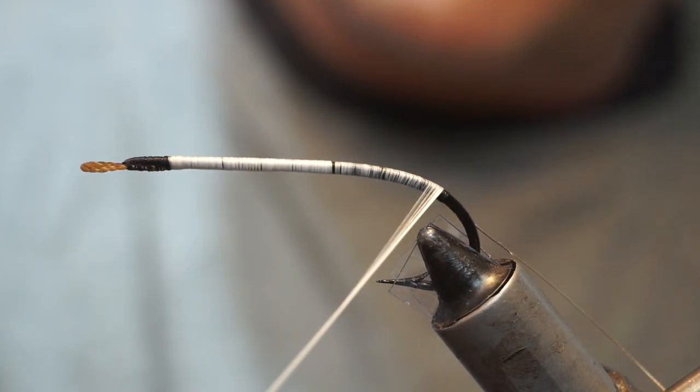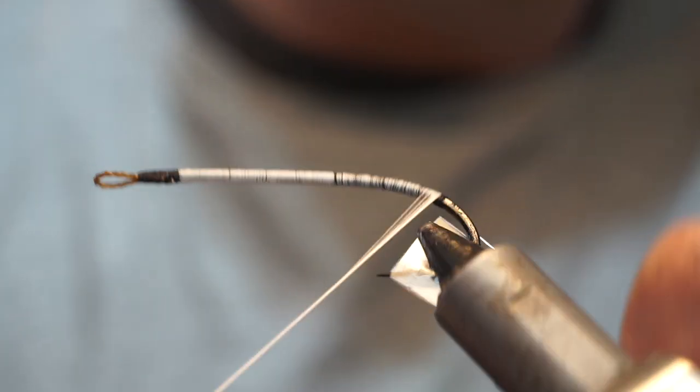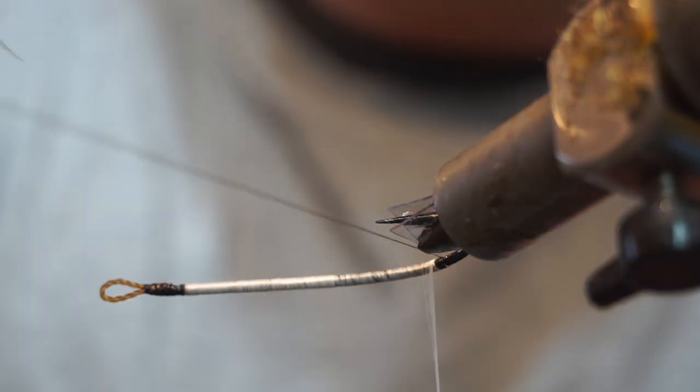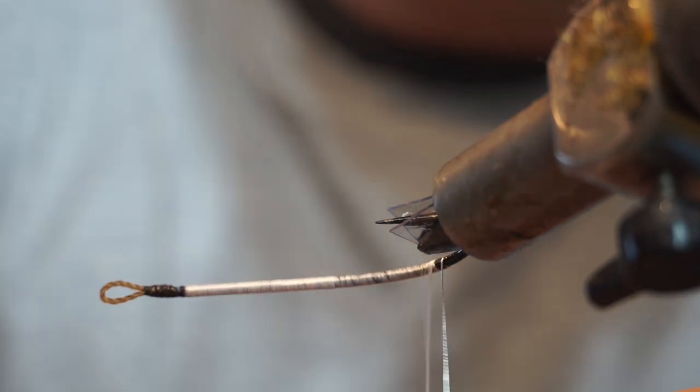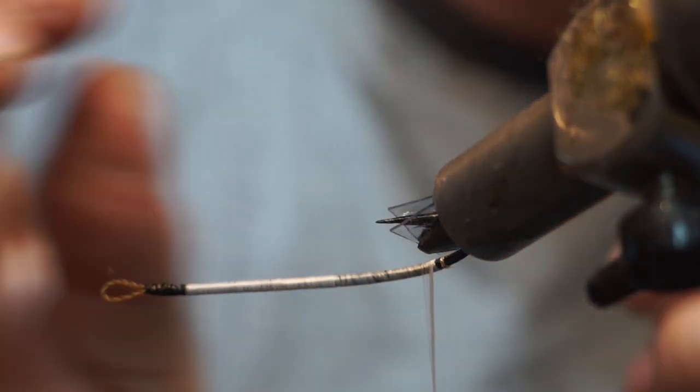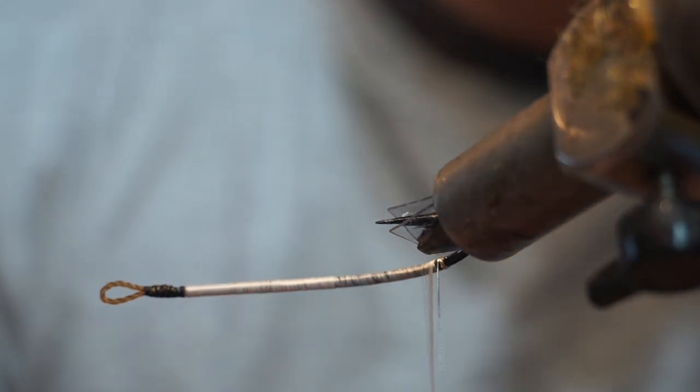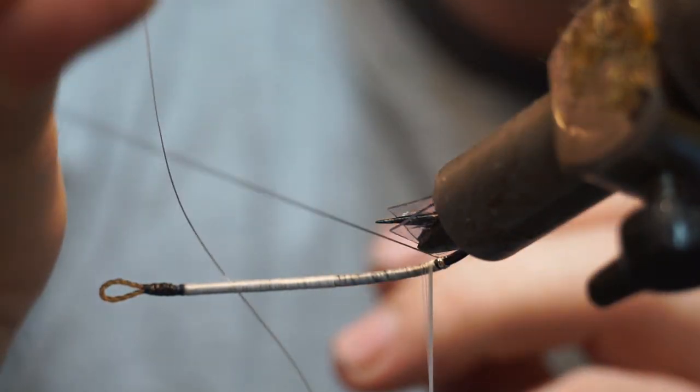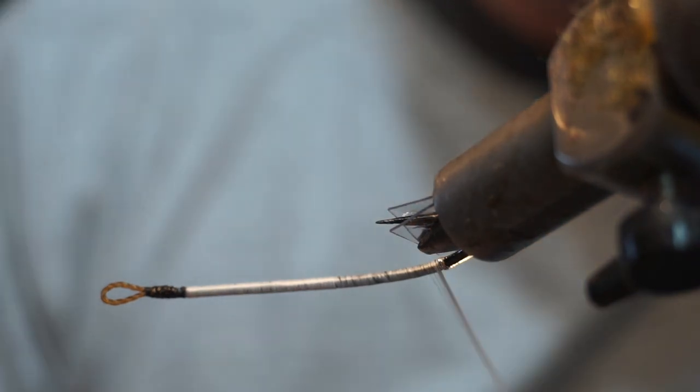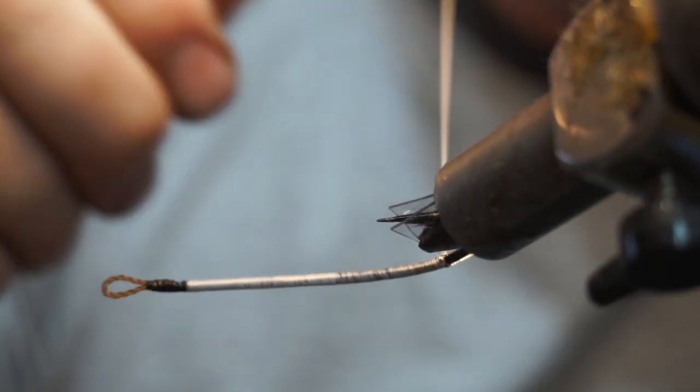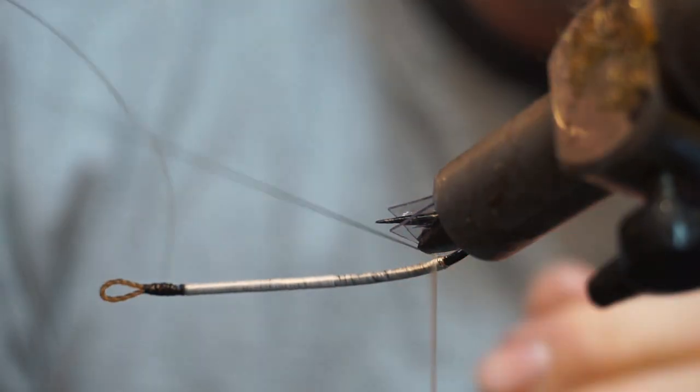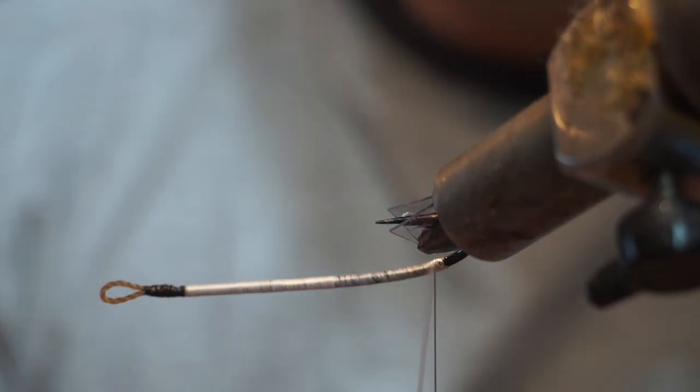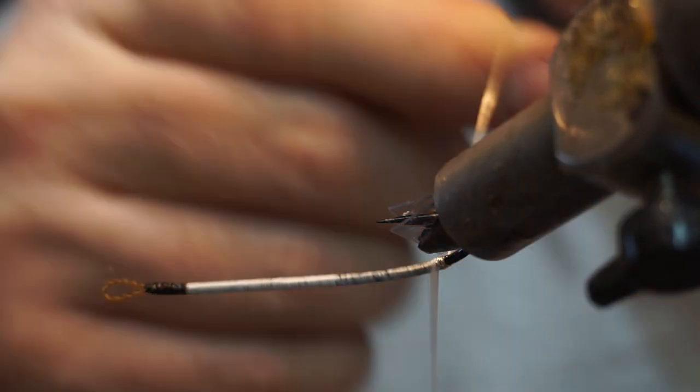I'll now flip this over and what I'm going to do is actually wrap the tip. So generally that's going to be three to five turns. Take my floss right back tight up to it, and then when I'm finished, I'm going to come over the top and tie it in.